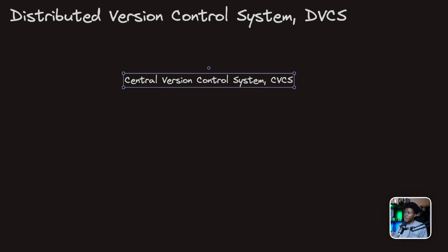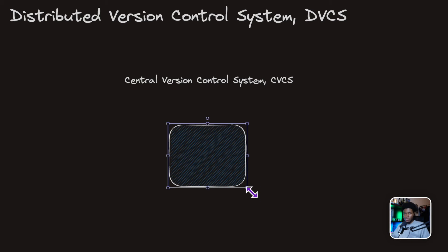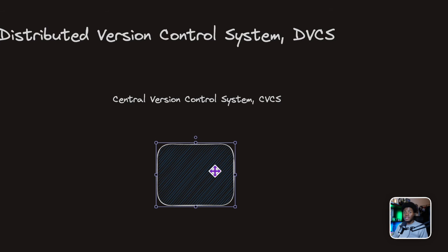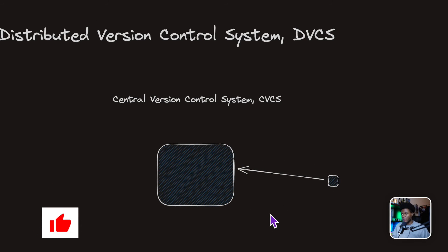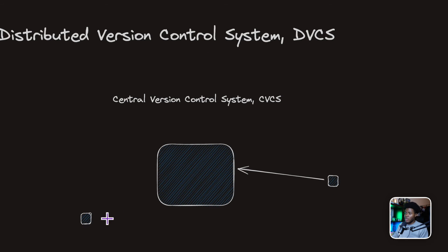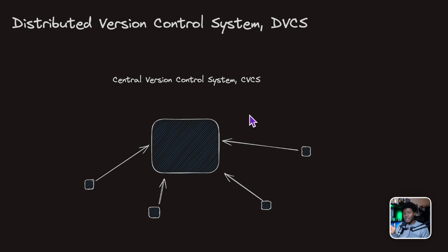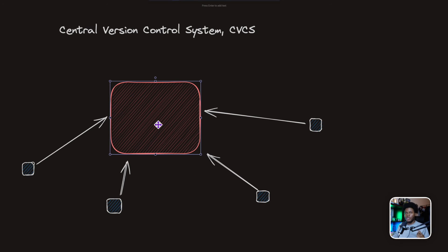With a central version control system, you have the main project living on a server — a centralized server. Anybody who wants to make changes to the project has to push their changes to this server. Even if it's just you on your laptop, you always have to send your changes to this server. In a company setting with different engineers, everybody needs to send their changes to the server. The server is where you manage your project and track its history.